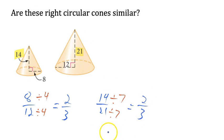Their heights also have a ratio of 2 to 3. So these two cones are similar.